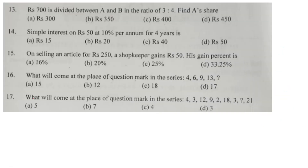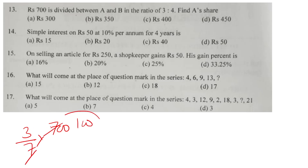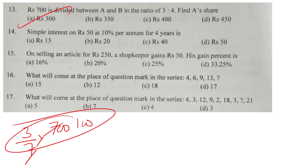Question number 13: divide 700 and find the share. The ratio is 3 to 4, total parts are 3 plus 4 equals 7. Cancel accordingly — option number A is the correct answer.